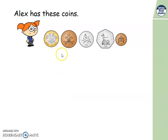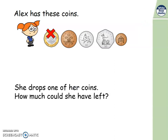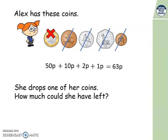Alex has these coins. Remember to order them so that you are counting on from the largest values. If she drops one of her coins, how much money could she have? You've got to imagine dropping one and finding out what's left. Pause the video and see if you can find all the possibilities — can you find a systematic way to do it? If she dropped the 1 pound coin, let's see what would be left, adding from the largest value: 50p, add 10p — that's 60, add 2 more — 62, add 1 more — that's 63 pence.